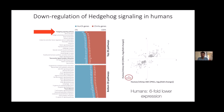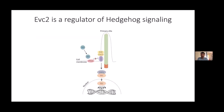Hedgehog signaling is known to play an important role in craniofacial development, but it hadn't been linked to any human-specific changes before. Looking at the genes involved, one stood out with a larger fold change than any other — a gene called EVC2, showing six-fold lower expression in humans. We could show this is a human-derived change because gorilla, as an outgroup, shows expression similar to chimp, making human the outlier.